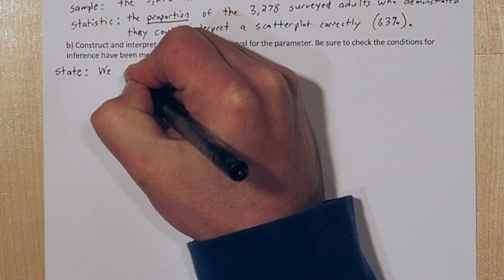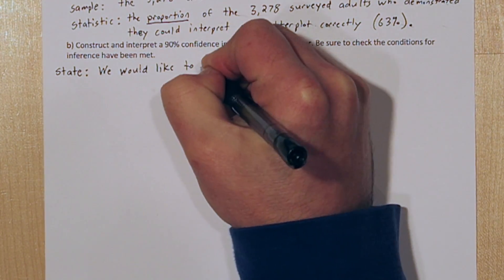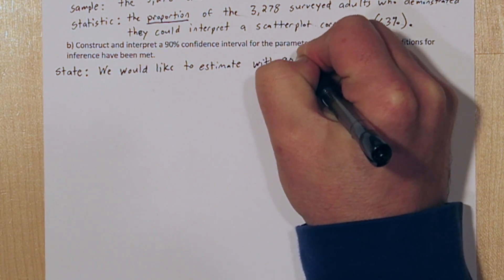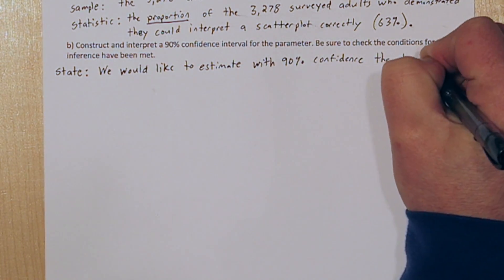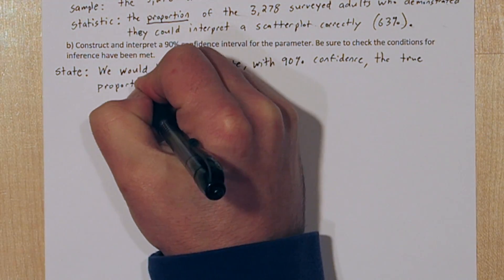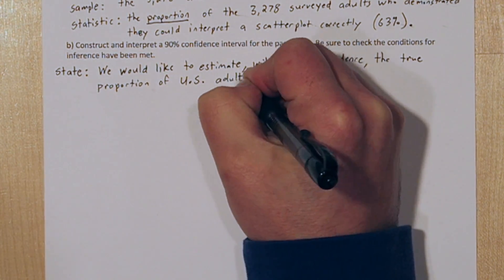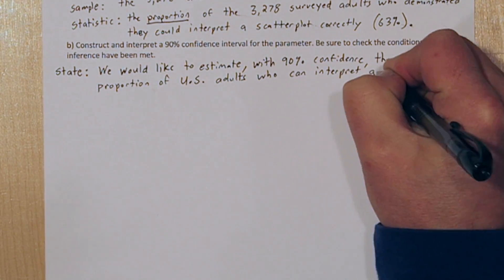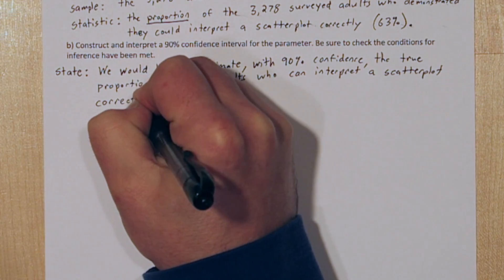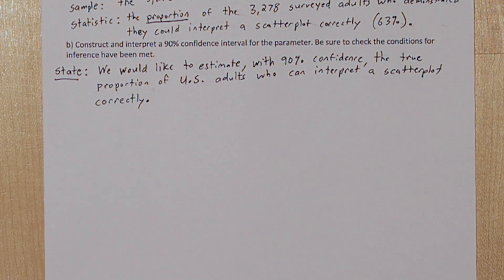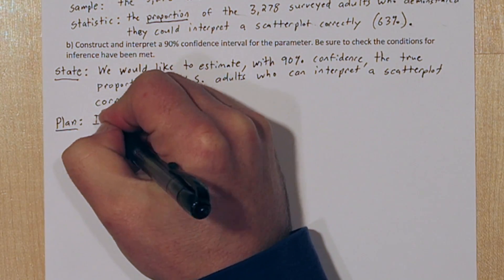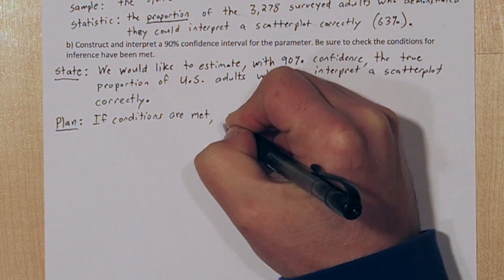We're going to use the four step solving process. So first let's state the parameter we're trying to estimate and at what confidence level. We would like to estimate with 90% confidence the true proportion of U.S. adults who can interpret a scatter plot correctly. Next we need a plan. In the plan we need to list our inference method as well as our conditions.